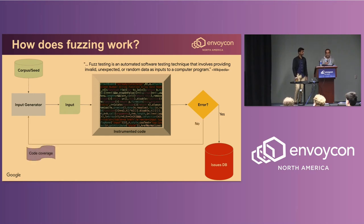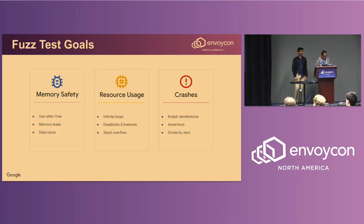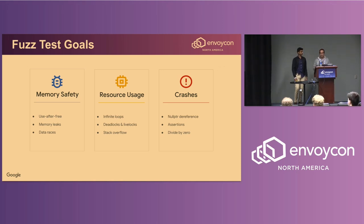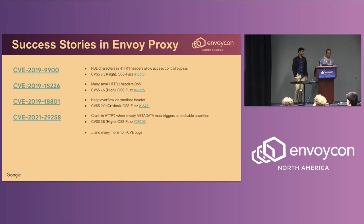Otherwise, the input generator takes the previous input and the code coverage report and uses them to propose the next mutated input. There are three main categories of errors fuzzers attempt to detect: first, memory safety errors such as use-after-free or data races; second, verifying resource usage is bounded, detecting infinite loops, deadlocks, or stack overflows; third, plain old crashes such as null pointer dereferencing, failed assertions, or segmentation faults. Some of our fuzzers were very useful in detecting severe bugs that ended up being CVEs, finding bugs that are hard to detect just by reviewing the code.